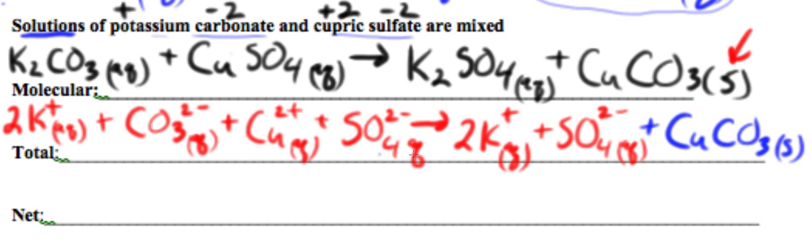If it's aqueous, it would have come apart. So we can see that potassium is the same on each side. Both the way we wrote it and the state is the same. Carbonate changed. Copper changed, but sulfate. So potassium and sulfate are what we call our spectator ions.